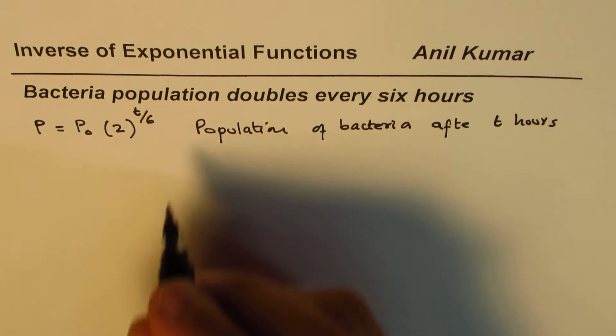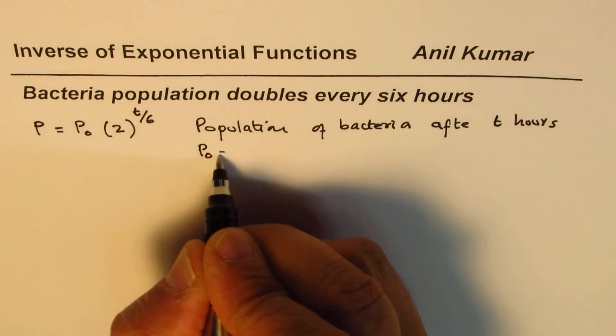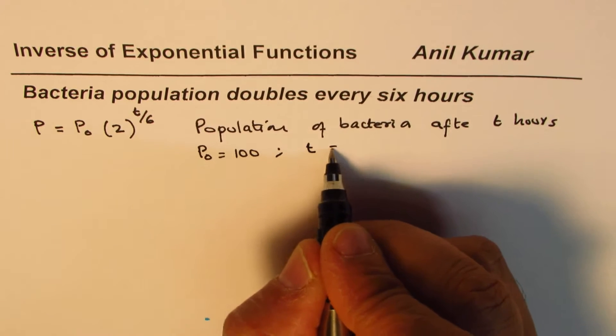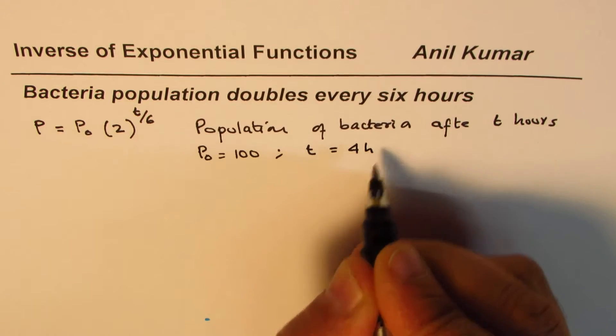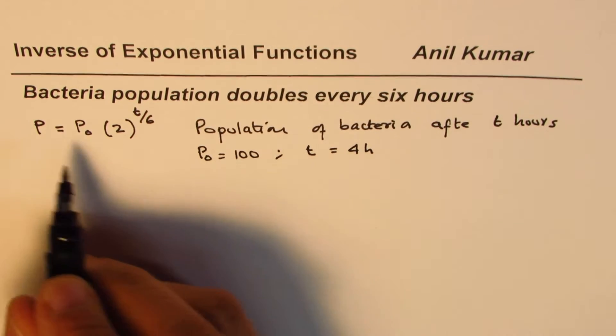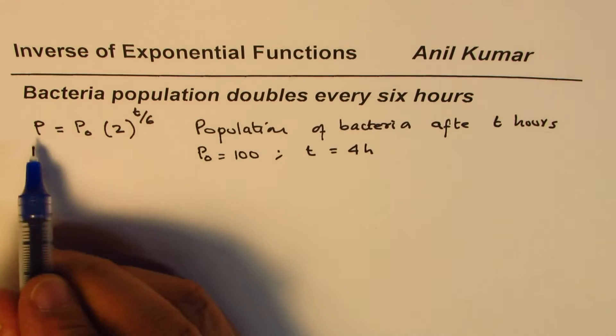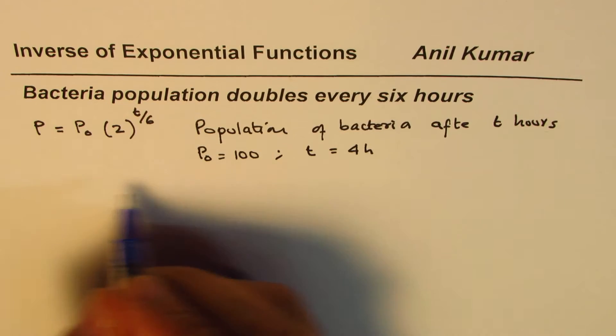So we can find the population after four hours as P equals to initial value hundred times two to the power of four over six, and then we can use calculator to calculate this value.